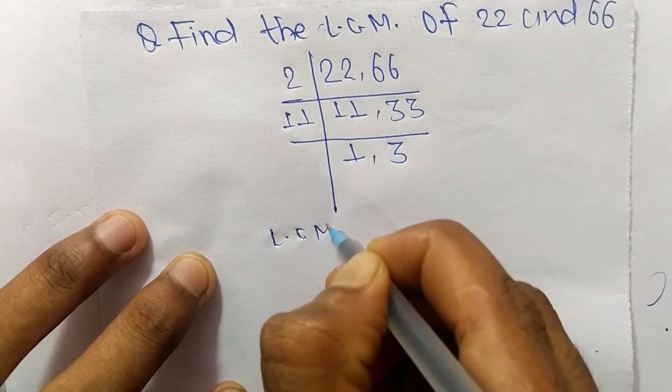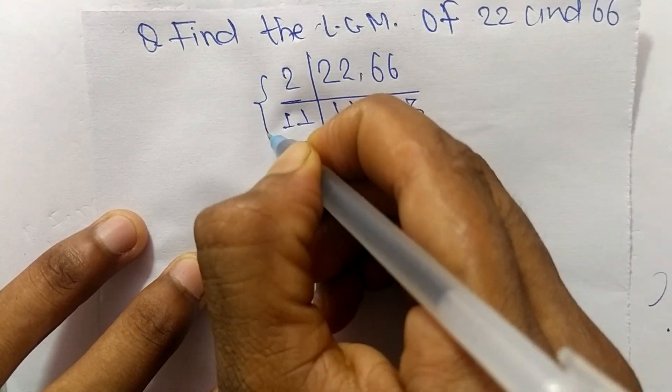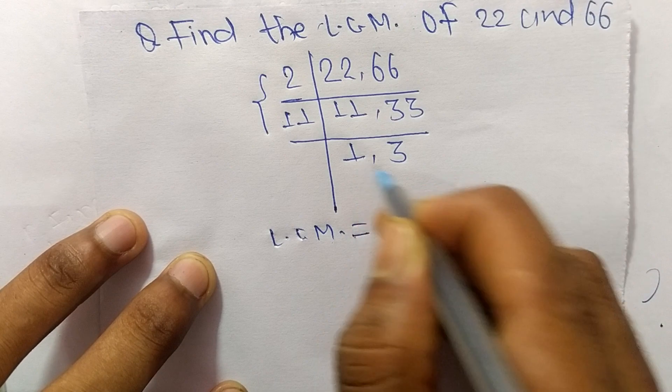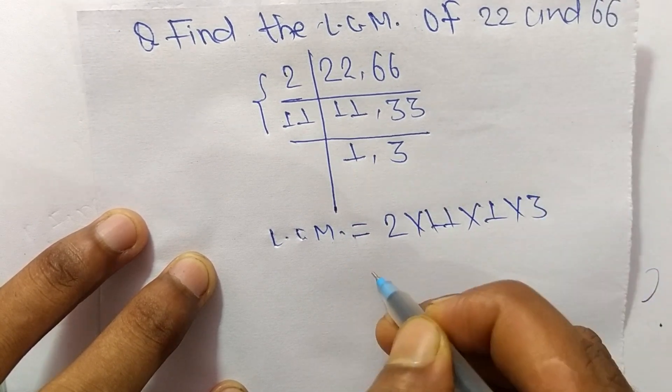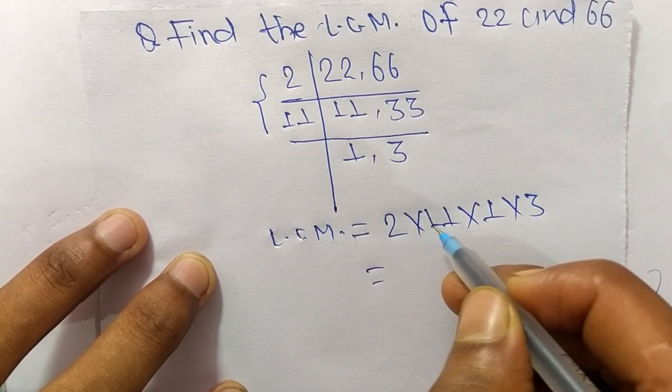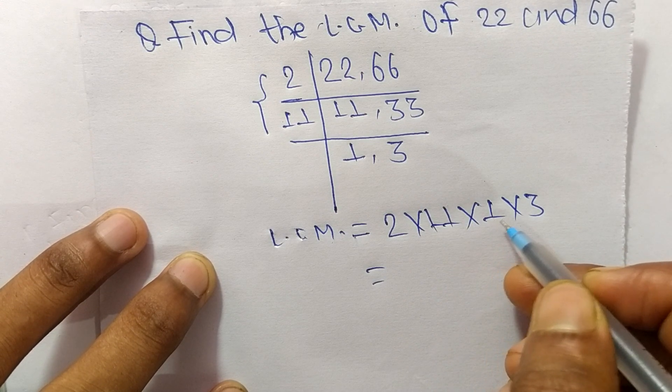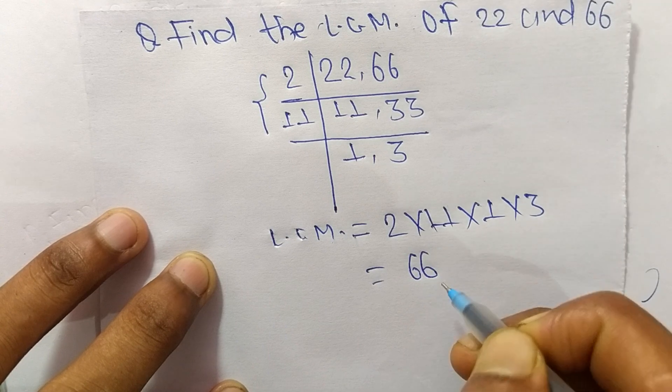The LCM equals 2 times 11 from the first part, and 1 times 3 from the second part. So 2 times 11 equals 22, times 1 is 22, and times 3 equals 66.